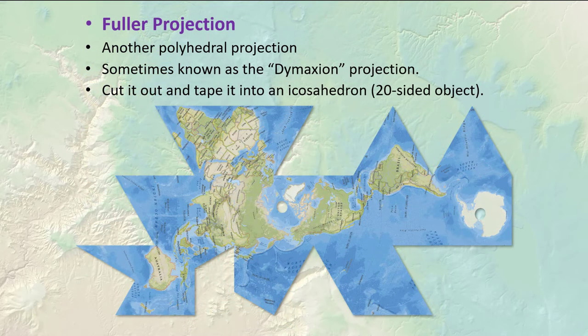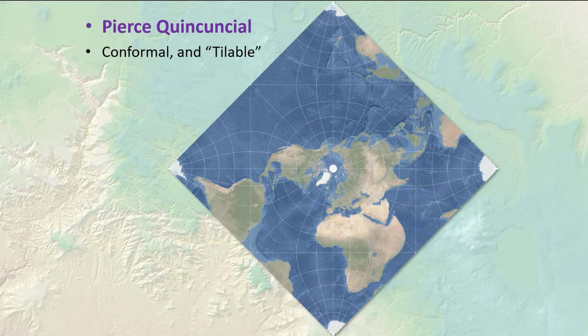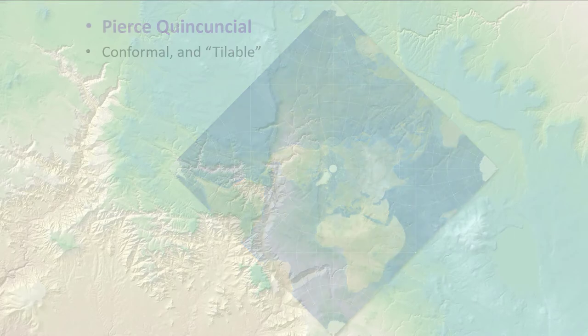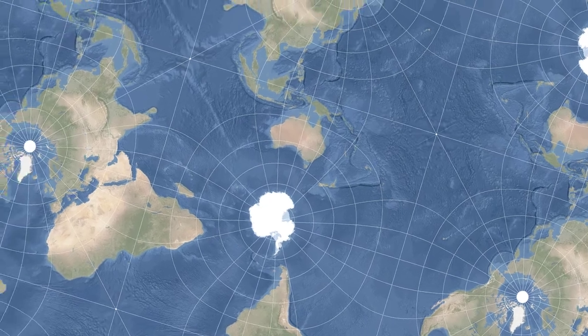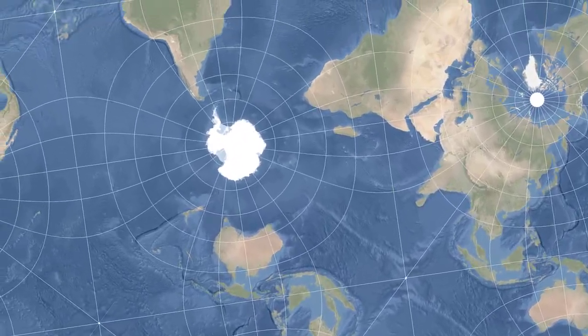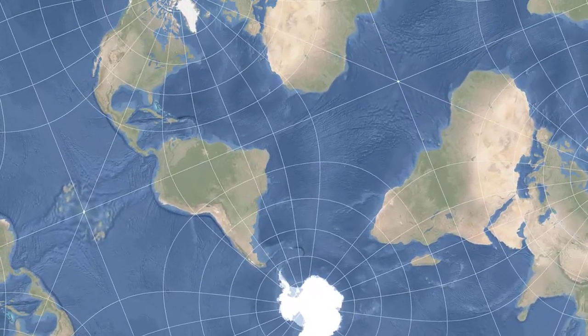Here we have another polyhedral projection called the Fuller projection, sometimes known as the Dymaxion projection. This one is composed of triangles that you can cut out and fold into a 20-sided object — if any of you ever played Dungeons and Dragons with those 20-sided dice, well, this is what you get. The Pierce Quincuncial is a neat one — it looks interesting, but it has this really interesting property in that it can be tiled: you can make a whole bunch of them, stitch them together, and come up with a larger overall image. This one kind of reminds me of the movie Inception.